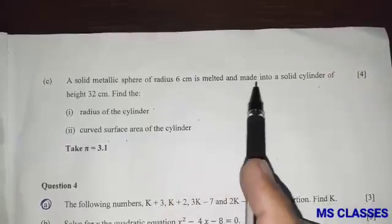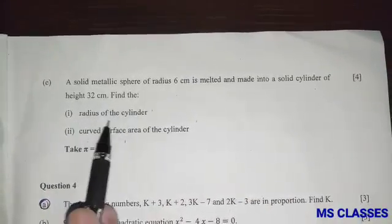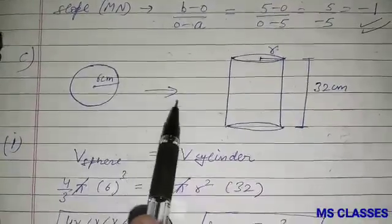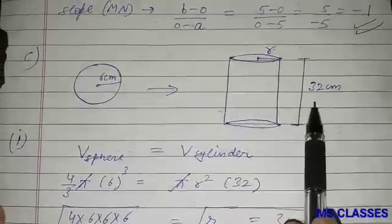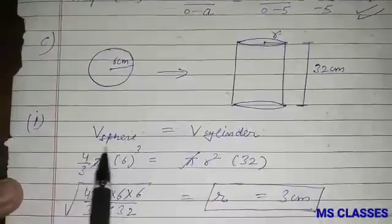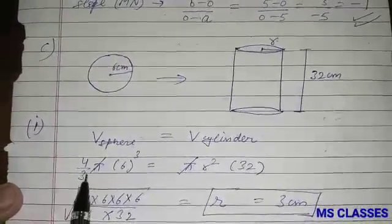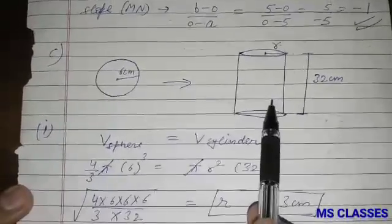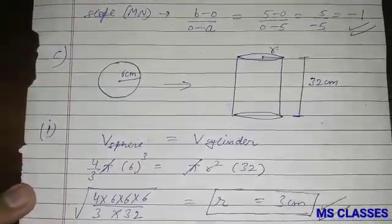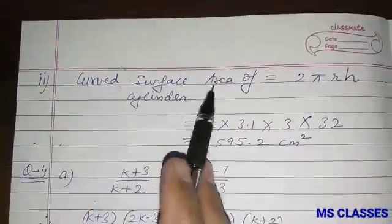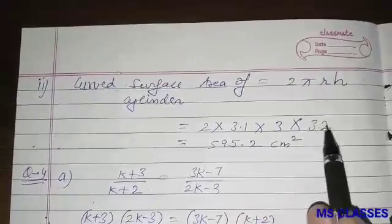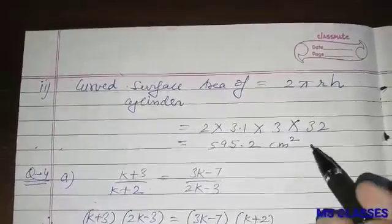A solid metallic sphere of radius 6 cm is melted and made into a solid cylinder of height 32 cm. Find the radius of the cylinder and its curved surface area. Since the sphere is melted, volume is conserved: (4/3)πr³ = πR²h, where r = 6 cm and h = 32 cm. Solving gives radius R = 3 cm. The curved surface area = 2πRh = 2 × π × 3 × 32 = 595.2 cm².